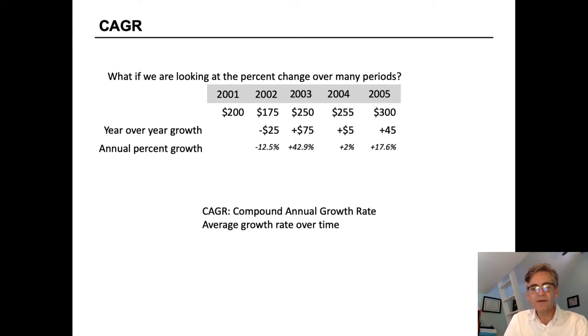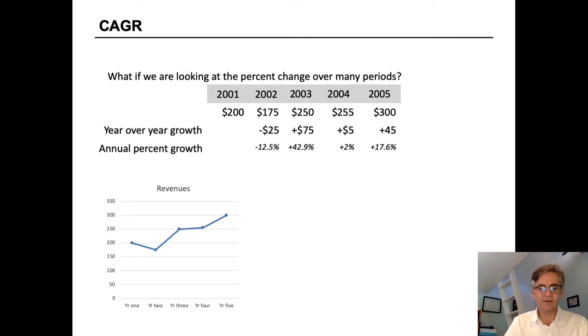If we want to understand what the average compounded growth rate was from 2001 to 2005, we can't just take an average of these annual percent growths. We have to think about it a different way.